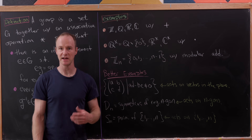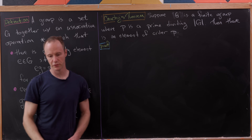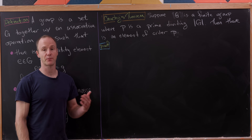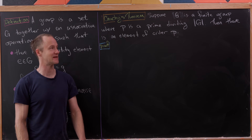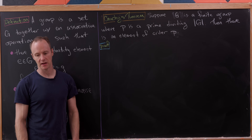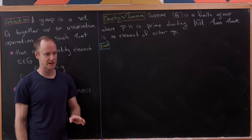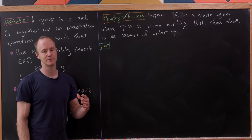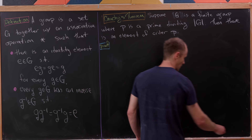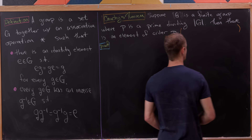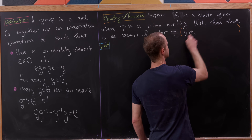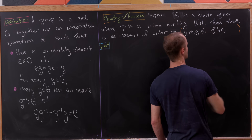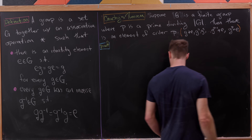Now let's state and prove Cauchy's theorem. It says: if we have a finite group G and a prime P that divides the order of G — the number of elements — then there is an element of order P. An element of order P means combining it with itself P times gives the identity, but doing it fewer than P times never equals the identity. So G^1, G^2, ... G^(P-1) are not the identity, but G^P equals the identity.